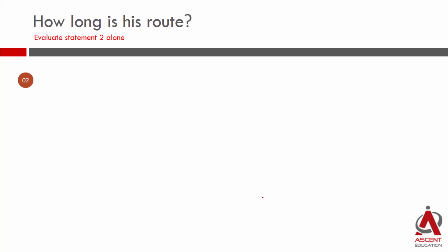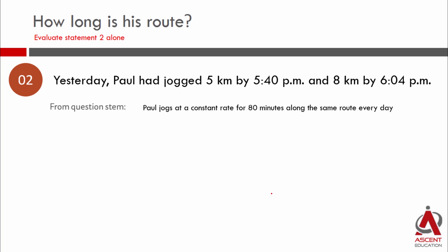Let's evaluate statement 2 alone. What does statement 2 tell us? Yesterday Paul had jogged 5 km by 5:40 pm and 8 km by 6:04 pm. So by 5:40 how much distance did he go? By 6:04 how much distance did he go? From the question stem, we know daily he jogs for 80 minutes. From statement 2 information we can infer: from 5:40 to 6:04 is 24 minutes. In that gap, how much distance did he travel? From 5 km to 8 km, which means 3 km is what he has traveled. So in 24 minutes, he has jogged 3 km.